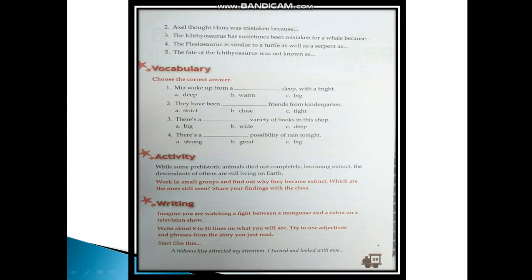Second is, Axel thought Hans was mistaken because in his imagination he saw five different dreadful sea monsters. Third is, the ichthyosaurus has sometimes been mistaken for a whale because it is as big and quick in its movements as a whale and it measure not less than a hundred feet in length and similar breadth.